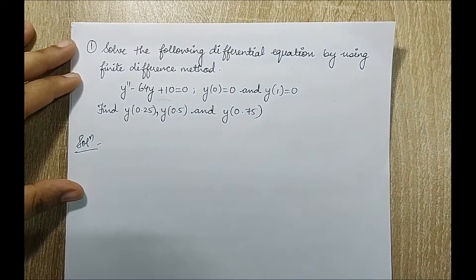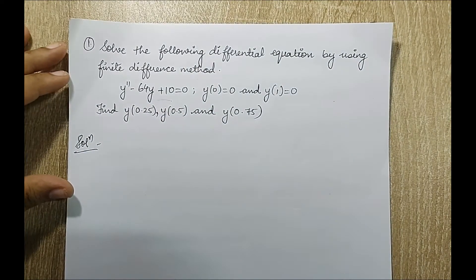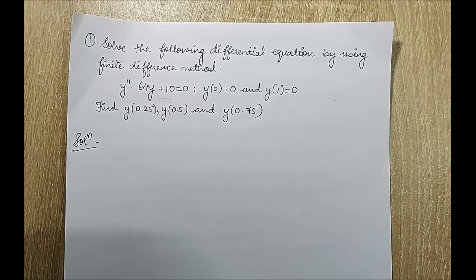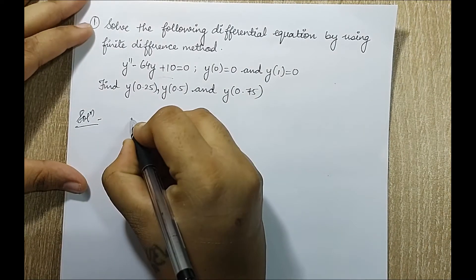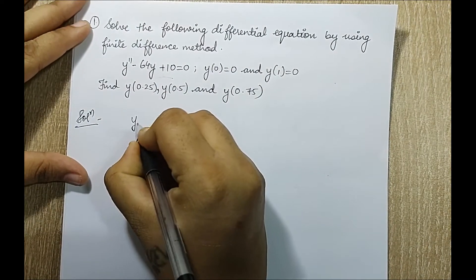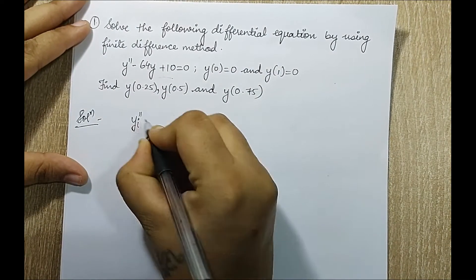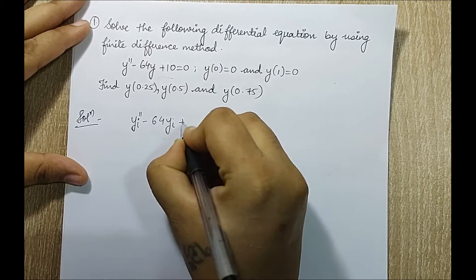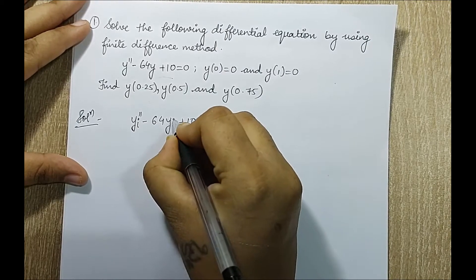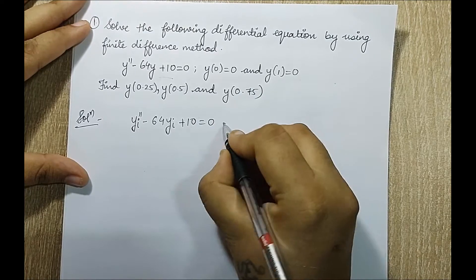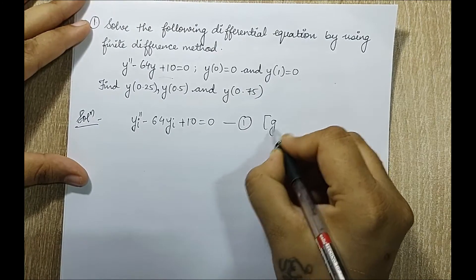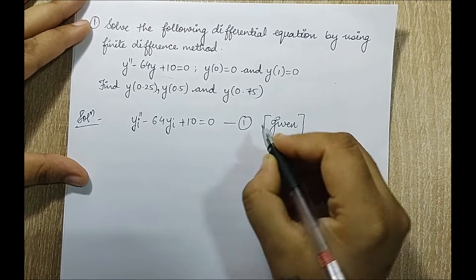The equation given to me is y double dash minus 64y plus 10 is equal to 0. I will make a small change and write y_i double dash minus 64y_i plus 10 is equal to 0. This is my first equation as given; I have just added the subscript i because that is what I am going to use.